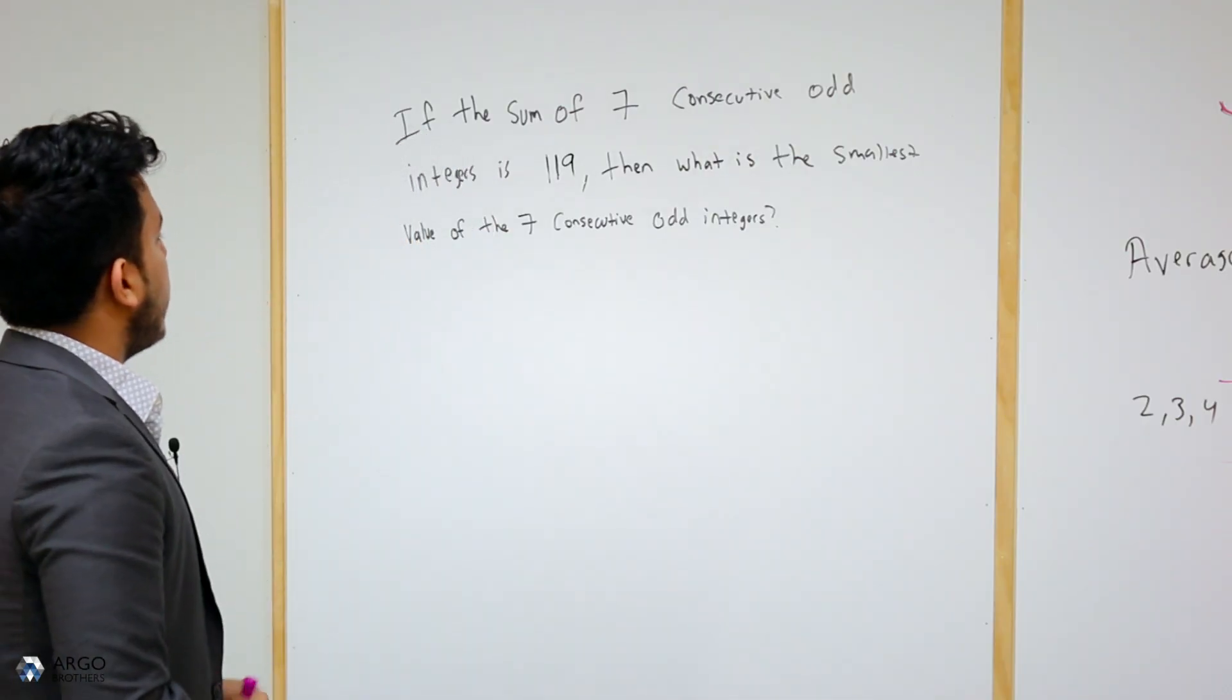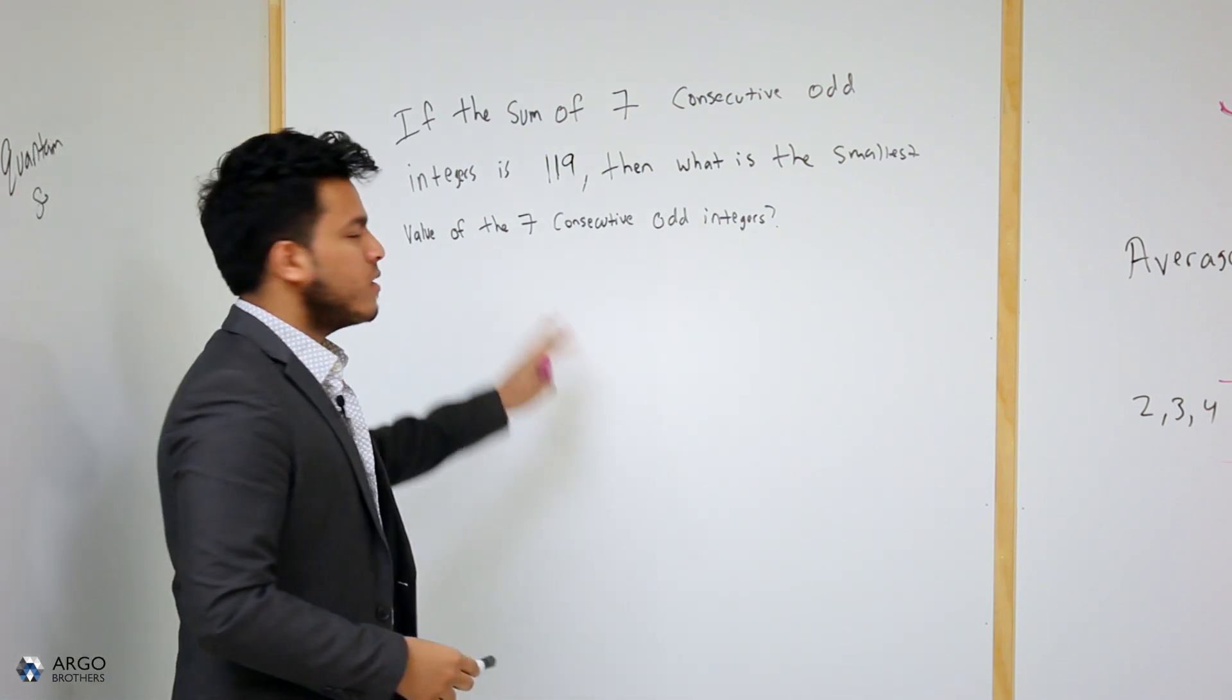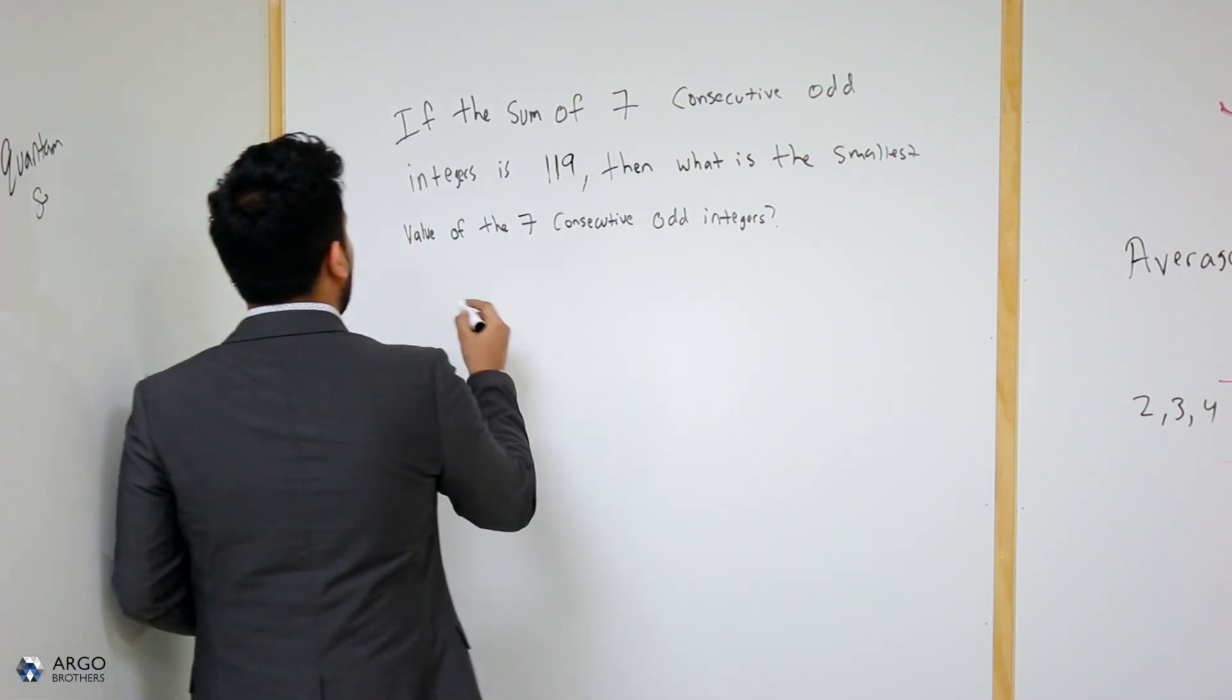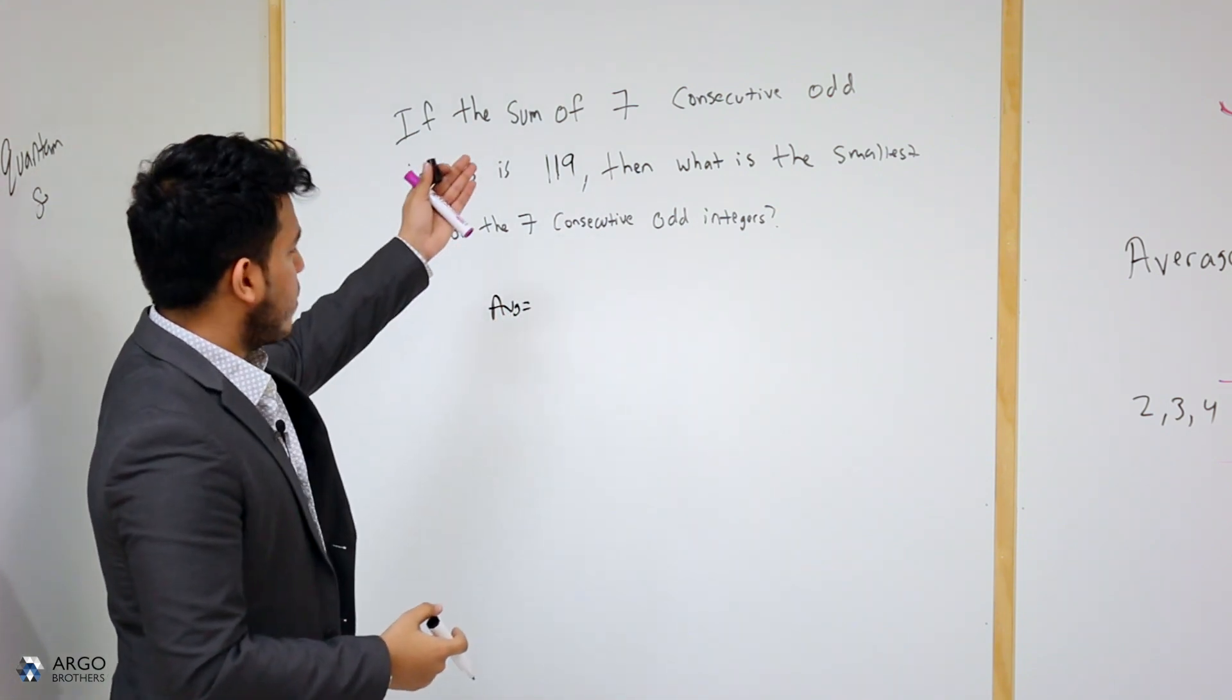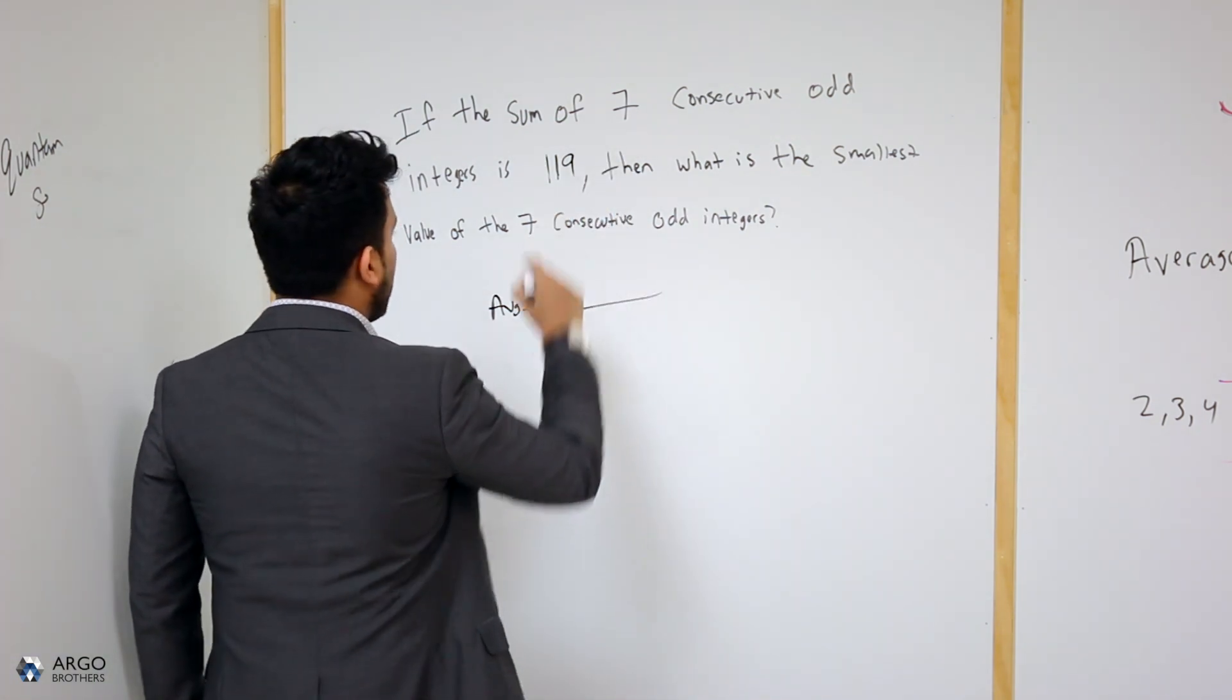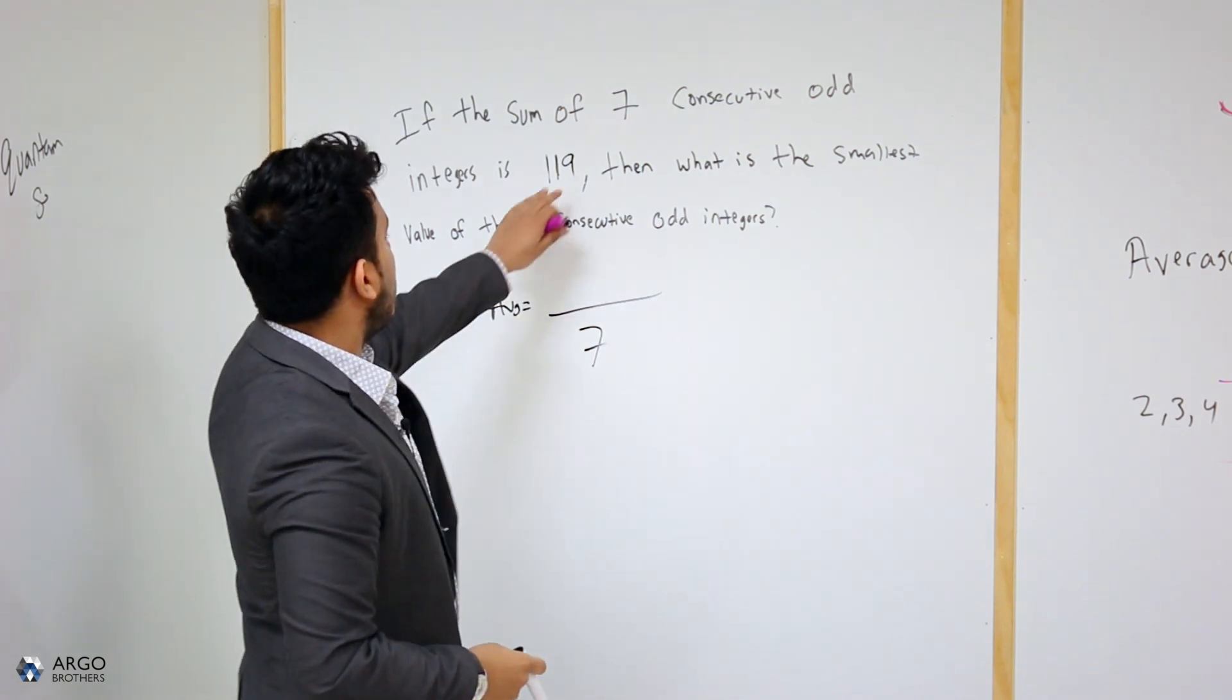If the sum of seven consecutive odd integers is 119, then what is the smallest value of the seven consecutive odd integers? Once again, very similar fashion. You go ahead and write down the average formula. You already know that the average is equal to the sum of numbers over number of numbers. Take a look at the values that they give you over here. The sum of seven consecutive odd integers. Here are my number of numbers. And then the sum is 119.